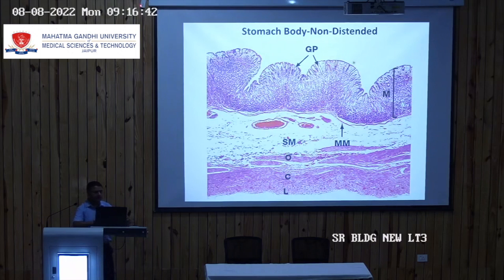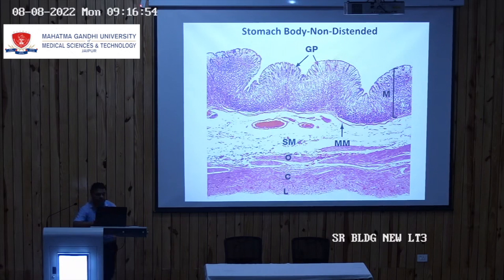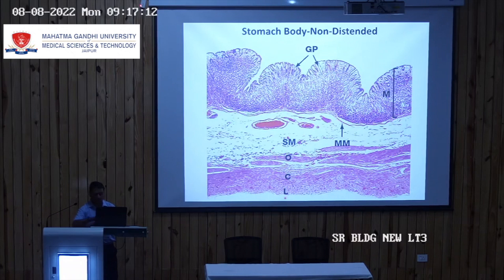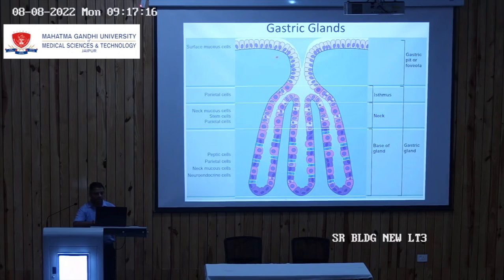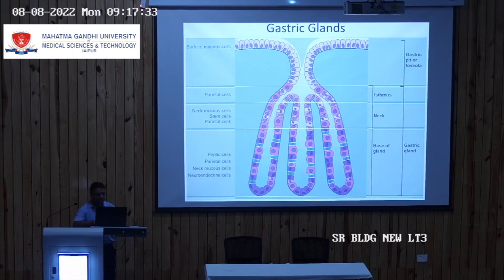This is the stomach in its non-distended form showing rugosities and gastric pits. Below this is the muscle layer having three layers: oblique, circular, and longitudinal. The gastric gland is connected to each gastric pit — one pit connects to around 1 to 7 gastric glands — lined by different kinds of cells. In the neck region there are mainly mucus cells; in the lower region, enzyme-secreting and acid-secreting cells.